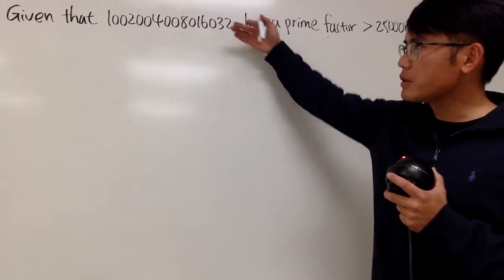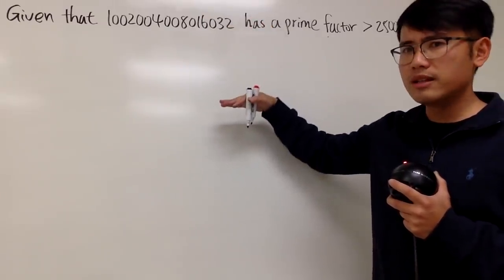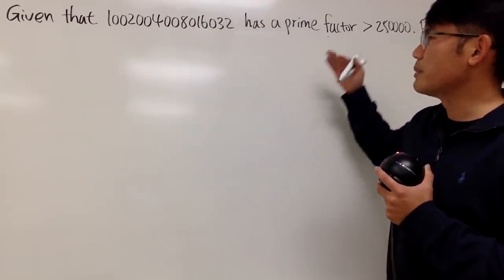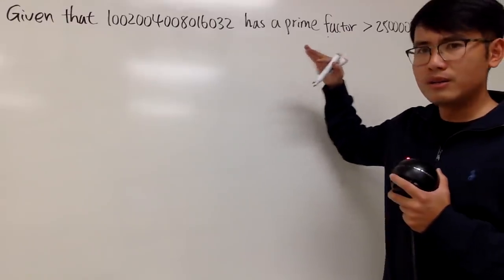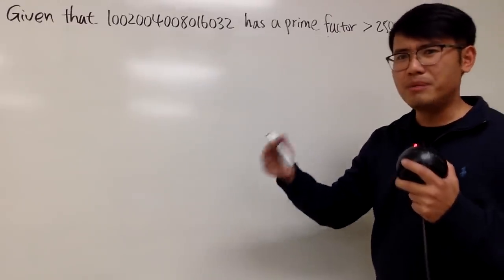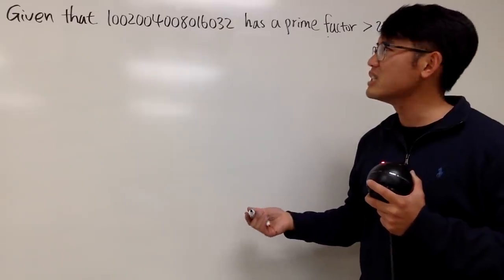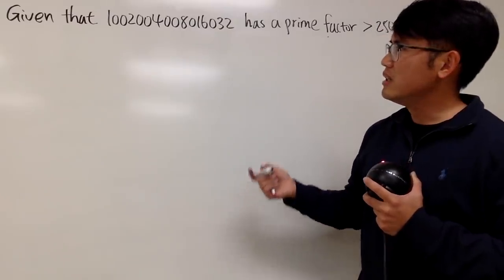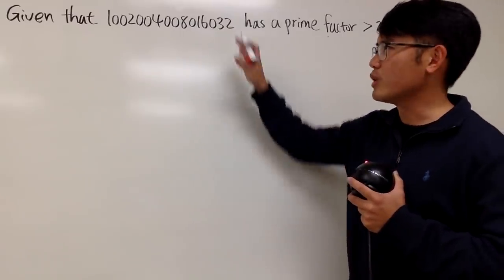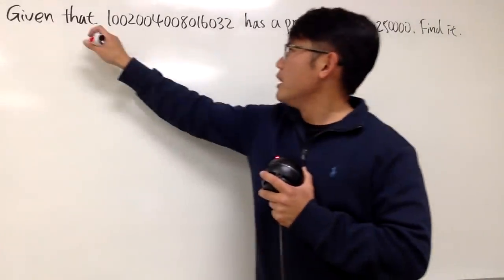Maybe we can somehow turn this into an algebra equation, because we want to talk about prime factors. So we should talk about how to factor this, and maybe we can change that to an algebra equation first. Therefore, we are going to make some observations on how we can break this number down.